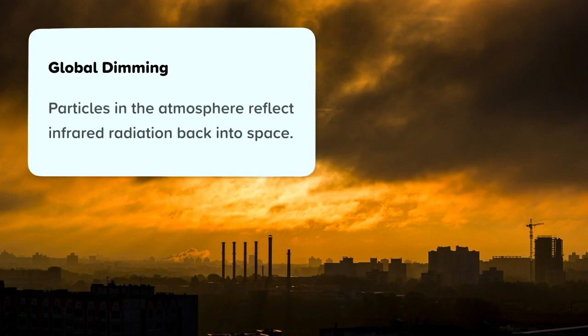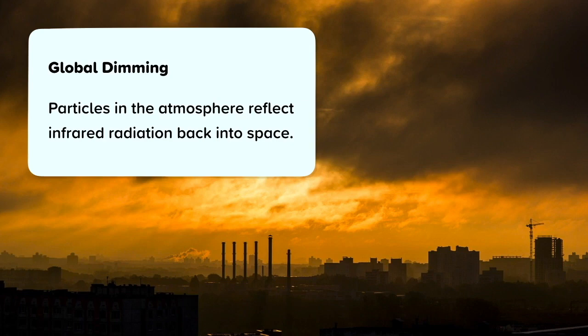Global dimming is when particles in the atmosphere reflect infrared radiation back into space. Global dimming reduces the amount of sunlight that reaches the Earth's surface. It is caused by particles in the atmosphere that come mostly from burning fossil fuels. These can counter the effects of global warming by reflecting some of the infrared radiation. But all life depends on photosynthesis carried out by producers, and photosynthesis depends on light. Global dimming also disrupts the water cycle as evaporation is slowed down.